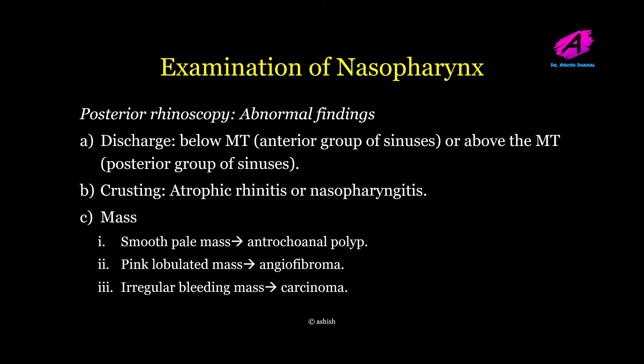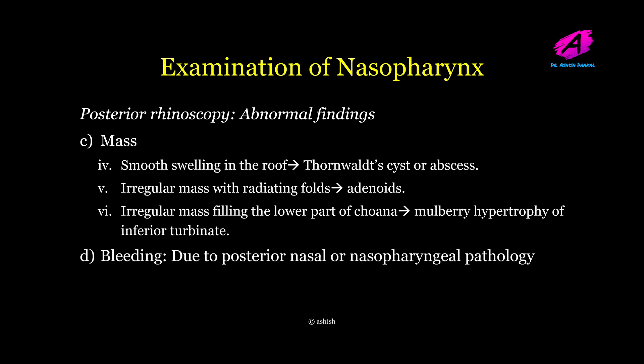If a mass is present in the nasopharynx, it may be a smooth pale mass such as an antrochoanal polyp, a pink lobulated mass in angiofibroma, or an irregular bleeding mass which may signify carcinoma. Swelling arising from the roof of the nasopharynx may be a Thornwaldt's cyst or abscess. An irregular mass with radiating folds may be adenoid. An irregular mass filling the lower part of the choana may be mulberry hypertrophy of the inferior turbinate. Bleeding may be due to posterior nasal or nasopharyngeal pathology.